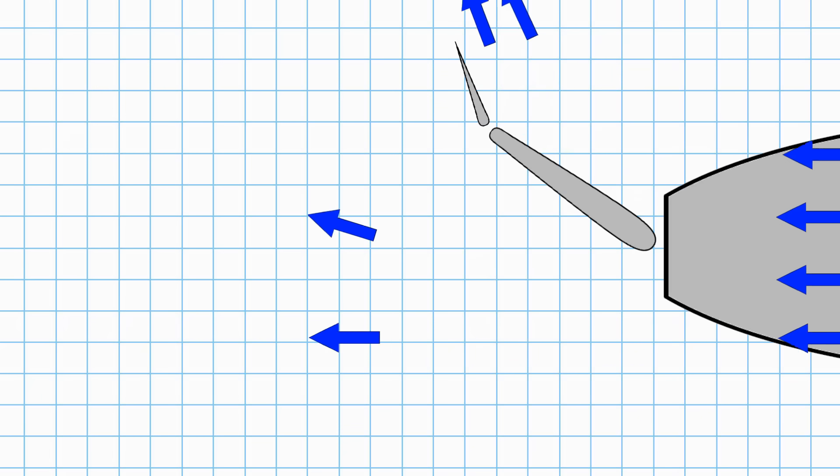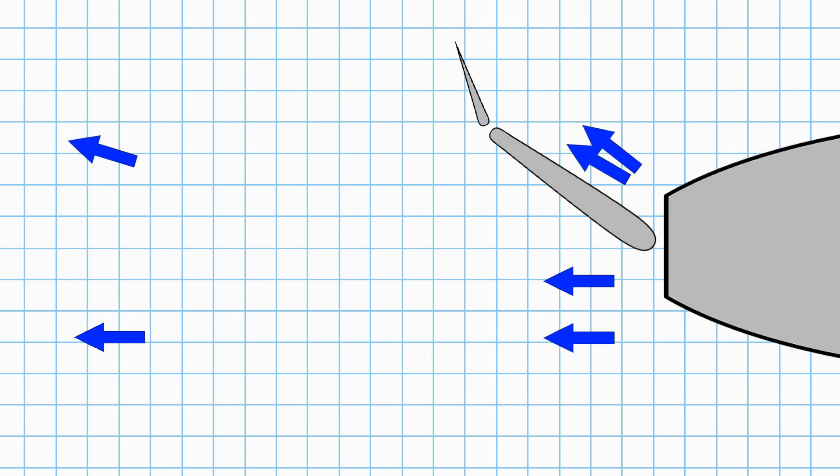When the rudder is hard over, the tip is practically directing water sideways. This makes the flap rudder one of the best options for very slow-speed ship handling. The rudder is very effective at slow speeds.